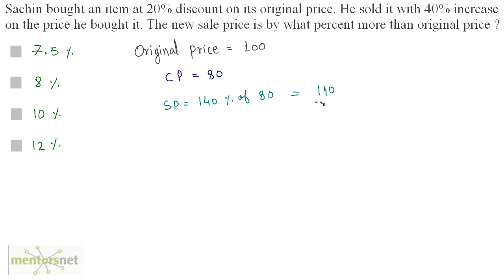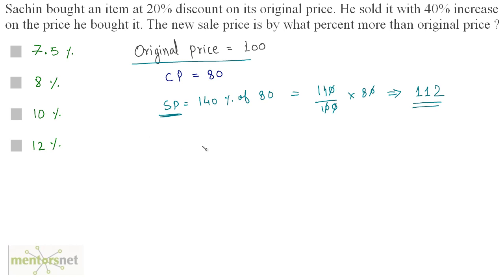So the selling price is 140 upon 100 times 80, which equals 14 times 8 equal to Rs. 112. The selling price is 112 and the original price is 100. The increase in price is 12, and since the original price is considered as 100, the new sale price is 12% more than the original price. So option D is the correct answer.